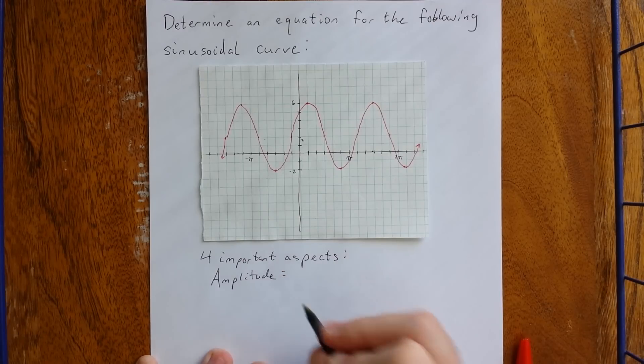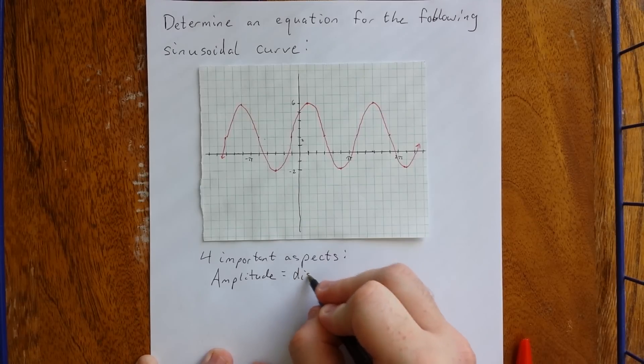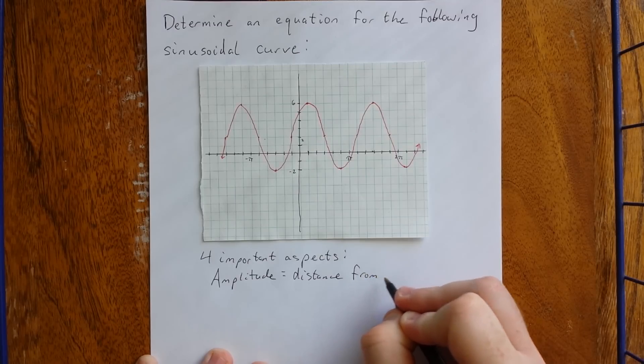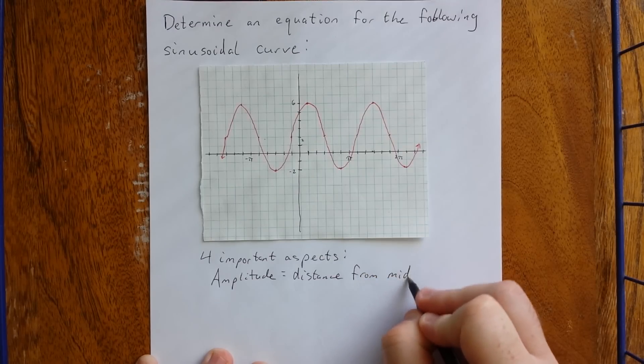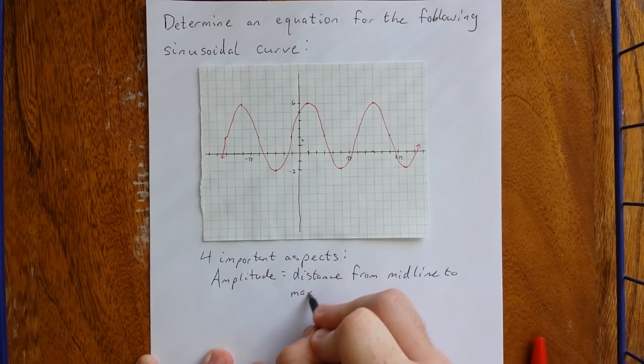The amplitude is the distance from the midline to a maximum or a minimum. Distance from midline to maximum or minimum. So that will be a vertical distance.